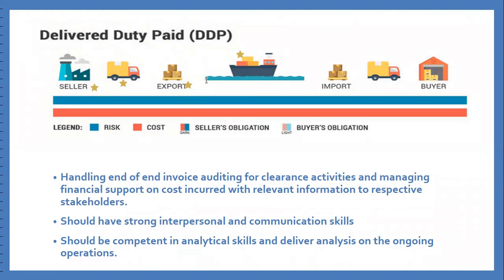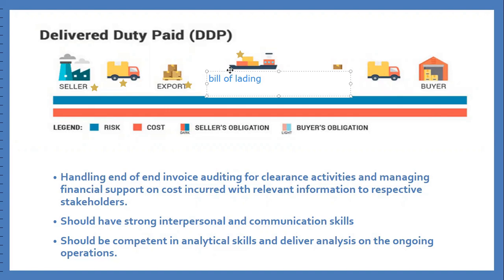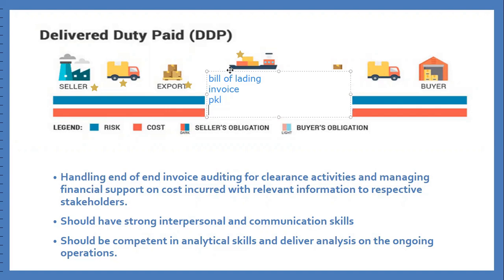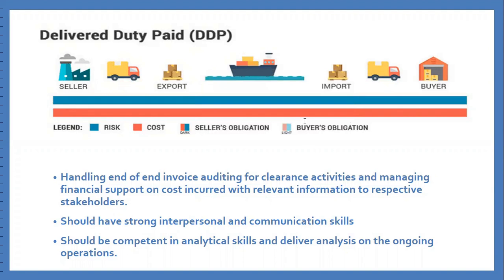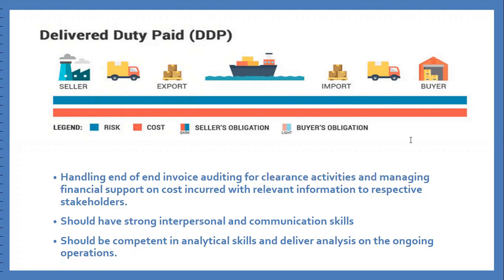After the customs process, the shipping company provides the Bill of Lading. The Bill of Lading is very important — we need to send it to the bank along with other documents as required by the bank, such as the commercial invoice, packing list, certificate of origin, insurance, and the shipping bill. These documents are presented to the bank at the time of payment. The invoice prepared for bank presentation is as per the buyer's requirements — this is what we call end-to-end invoicing.